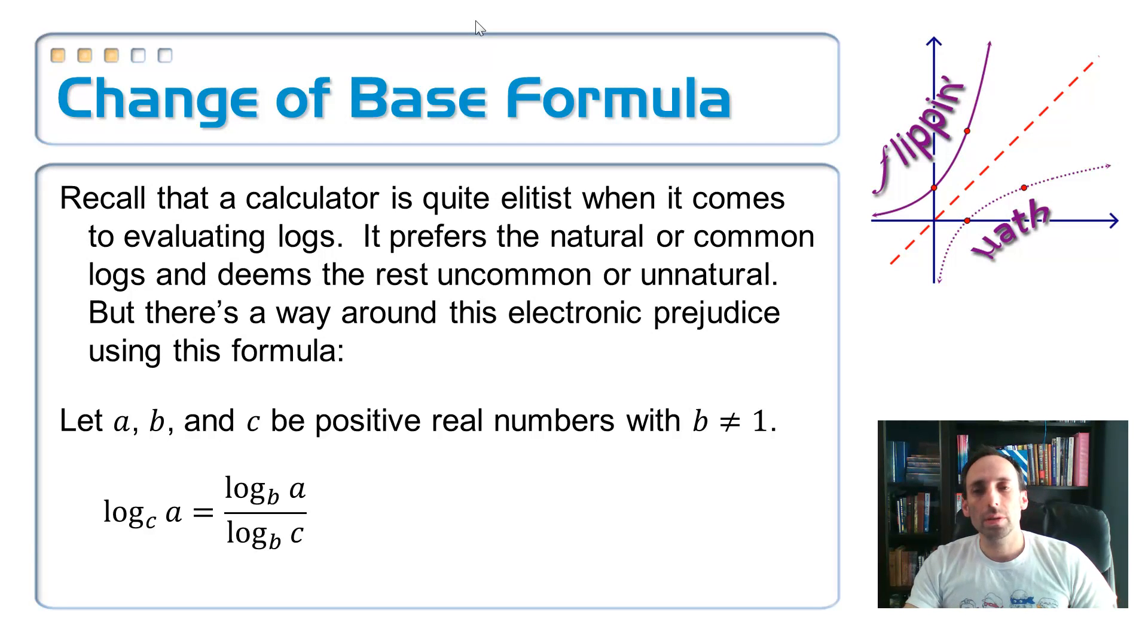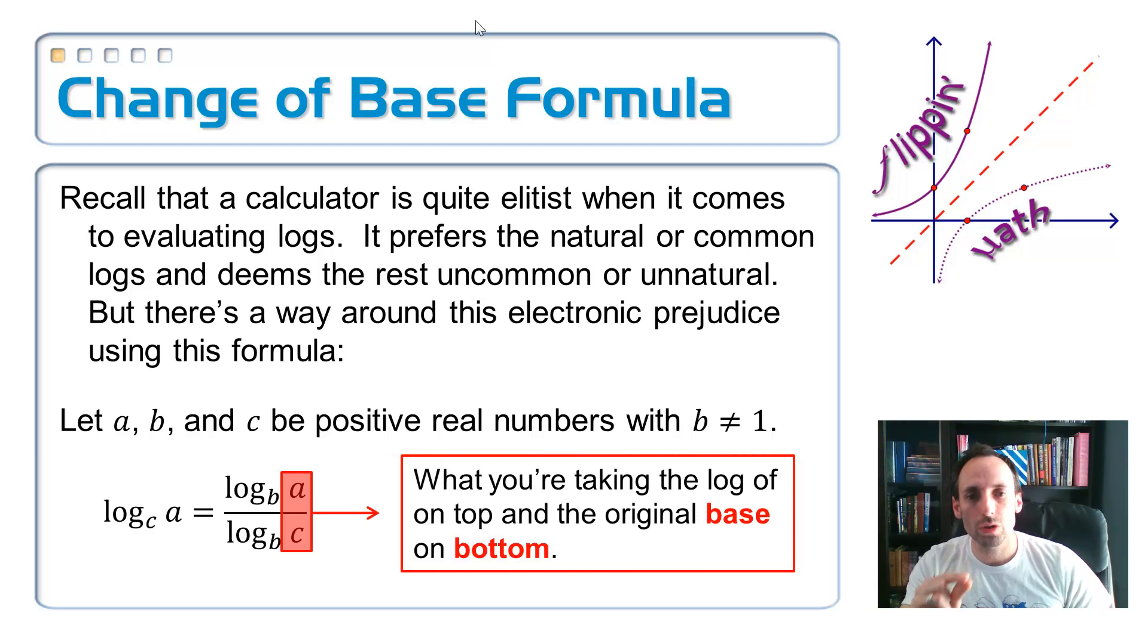So, on the left-hand side, it says the log base C of A. C is the base that we want to get rid of. So, for example, it's the log base 2 of something, and I can't put that in my calculator. So, I change it into a base that I can put in my calculator, and that's going to be the B that's on the right side of this. The log base B of A divided by the log base B of C. Look at those letters and look at where they came from. On the top, the A is what you were originally taking the log of, and the C was the original base, and that's the easiest part to remember. What is on the bottom is the original base. So, what you're taking the log of is on top, and the original base is on the bottom. Base is on the bottom. It should be very easy to remember.